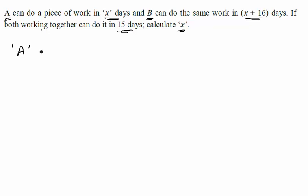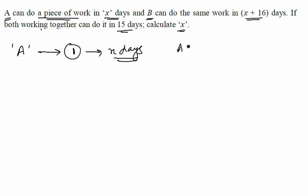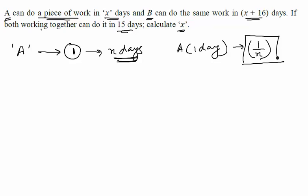Let us talk about A first. A can complete one piece of work — let us call this one piece of work — in x days. So if I have to calculate how much work A is doing in one day, he is doing 1/x portion of the work in one day, because of which working for x days he is able to complete the work. So 1/x becomes the power of A, as he completes 1/x portion of the work in one day.